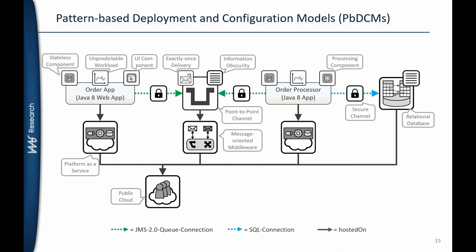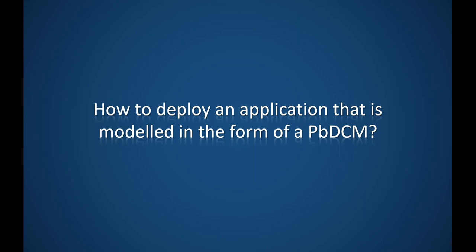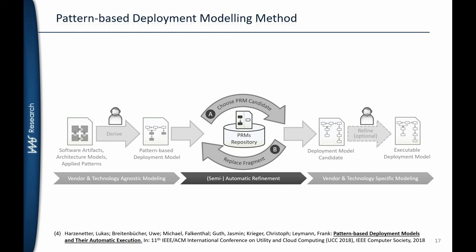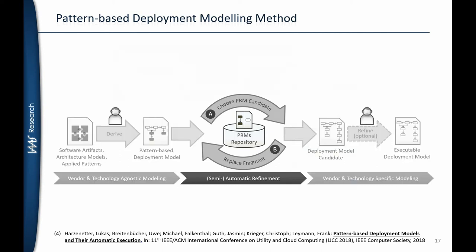Now we have this pattern-based deployment model — it only describes the application in an abstract way, defining its semantics, so we cannot deploy it directly. The question is: how do we deploy an application modeled as a pattern-based deployment model? We came up with an iterative process. We take the pattern-based deployment model and introduce so-called PRMs — pattern refinement models — choosing different refinement models that rewrite sets of patterns to concrete technologies. We apply these pattern refinement models iteratively until no patterns remain, at which point we call the result a deployment model candidate. This candidate can then optionally be refined, for example to insert passwords.